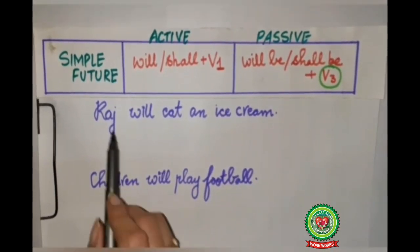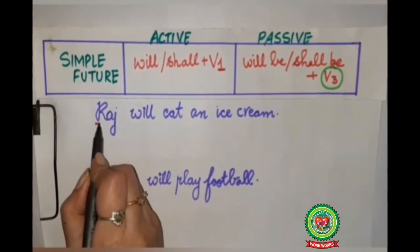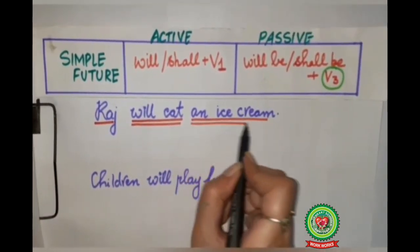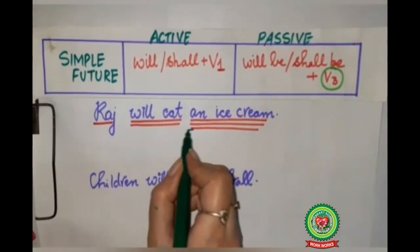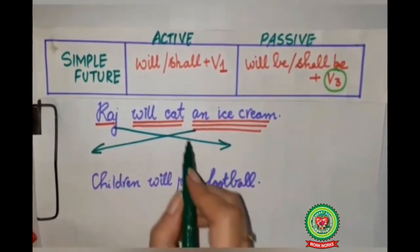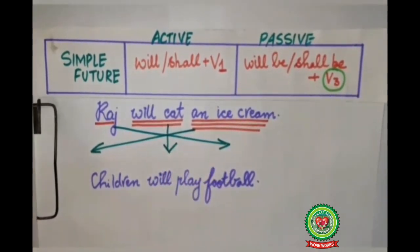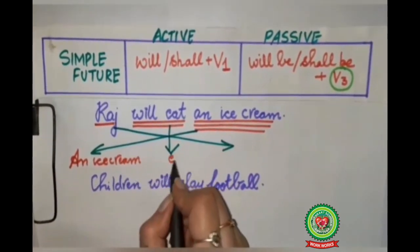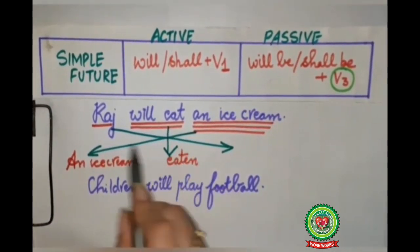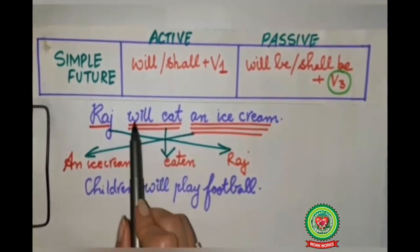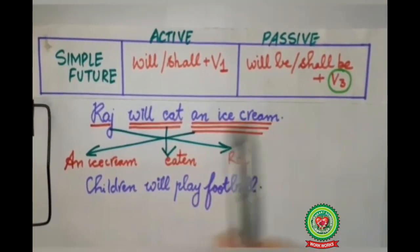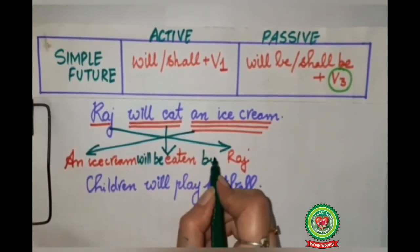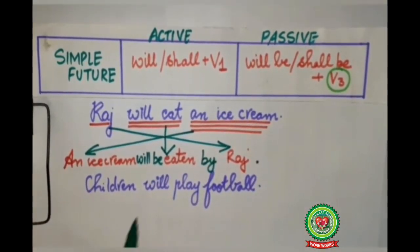Now we'll discuss the first example: 'Raj will eat an ice cream.' Who? Raj — so subject, single underline. Action word 'will eat' — double underline. What? 'An ice cream' — triple underline. We'll do the same changes: 'an ice cream' comes to the beginning, Raj goes to the end, 'eat' changes to its past participle 'eaten', and 'will' changes to 'will be'. So the sentence becomes: 'An ice cream will be eaten by Raj.' Full stop.